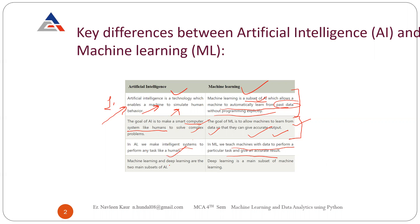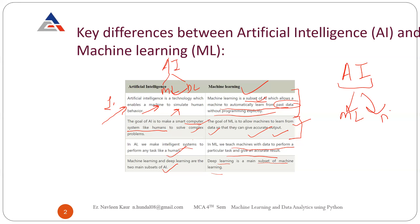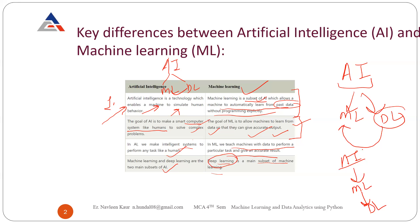Machine learning and deep learning are the two main subsets of AI. AI has two subsets: one is machine learning, and the other is deep learning. But deep learning is actually further a subset of machine learning. So it goes like this: AI is at the top, from AI the subset is machine learning, and from machine learning its subset is deep learning. AI is at the top of the hierarchy, then machine learning is its sub-part, and then deep learning. Our main focus will be on machine learning.